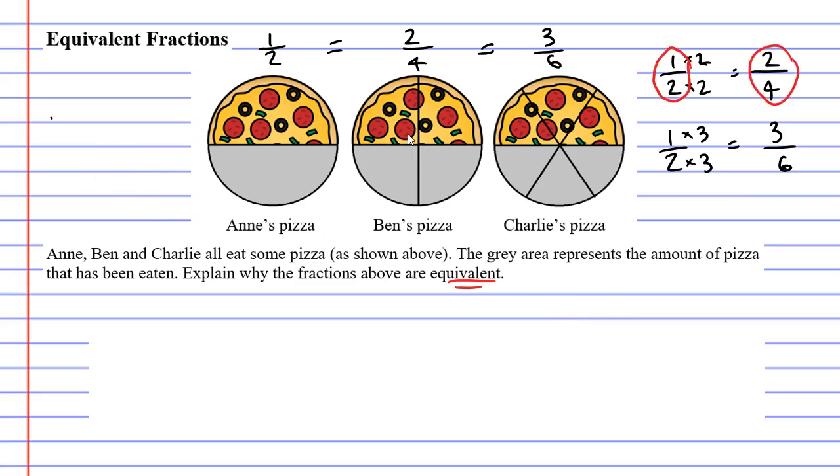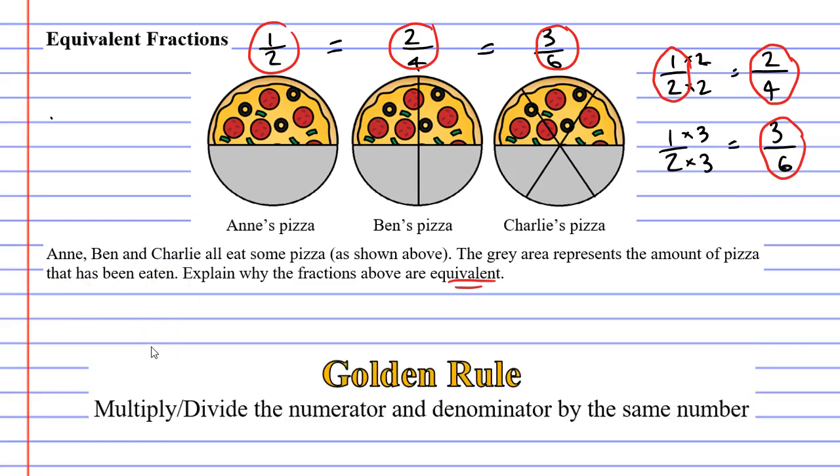1/2, 2/4, and 3/6. These are exactly the same as the three fractions we had with our pizzas. So I would like to introduce you to what I call the golden rule. The golden rule being that you can multiply or also divide the numerator and denominator by the same number. Now if you do this, you will get an equivalent fraction, which is basically a fraction that is exactly the same as the one you started with.